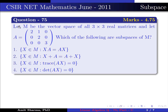The question is: let M be the vector space of all 3×3 real matrices, and let A be the 3×3 matrix with elements 2 1 0, 0 2 0, and 0 0 3. Which of the following are subspaces of M? Option 1: x belongs to M such that xA = Ax.